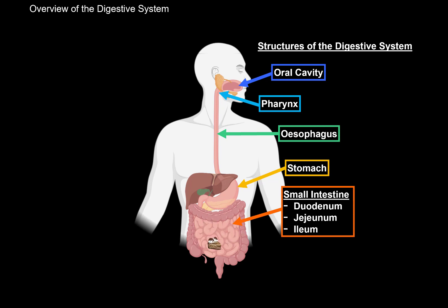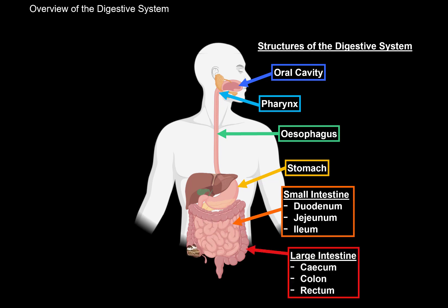And after the ileum, it's going to enter the large intestine, which consists of the cecum, the colon, and the rectum. And by the time it gets to here, this is how the cheesecake is going to look like. And the fuller the rectum gets, the higher we feel the urge to poop. So those are all the structures of the digestive system.